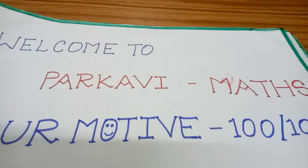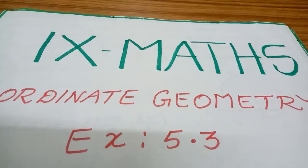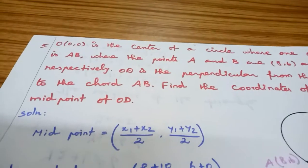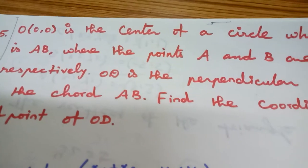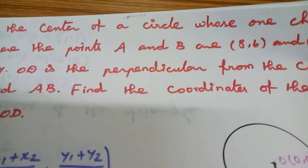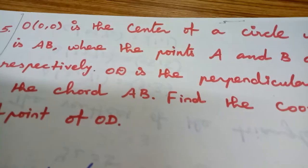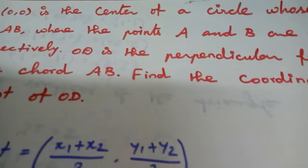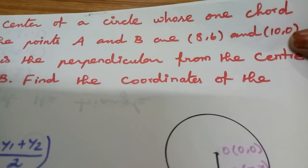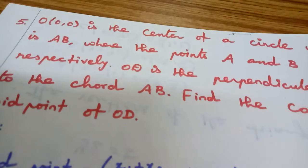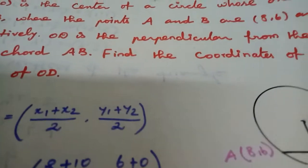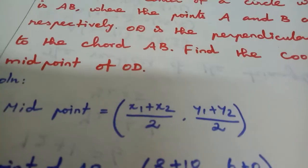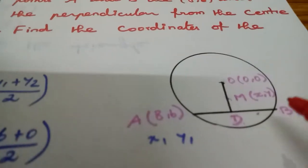Hi children, welcome to Parka Vimax. Now we are going to see about 9th max coordinate geometry, section 5.3, sums 5 and 6. O at (0,0) is the center of a circle whose one chord is AB. OD is the perpendicular from the center to the chord AB. Find the coordinates of the midpoint of OD.